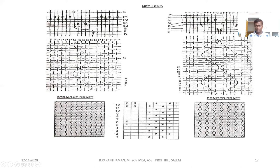In type two, the crossing end forms the pointer draft in its drafting system. Thank you all.